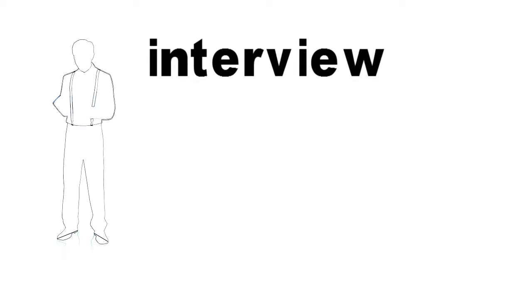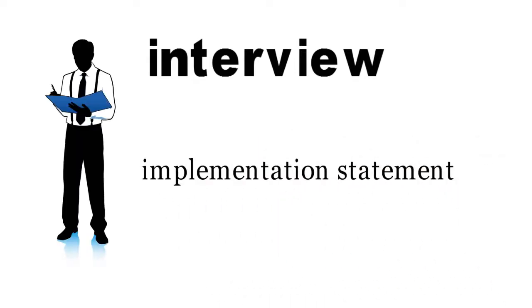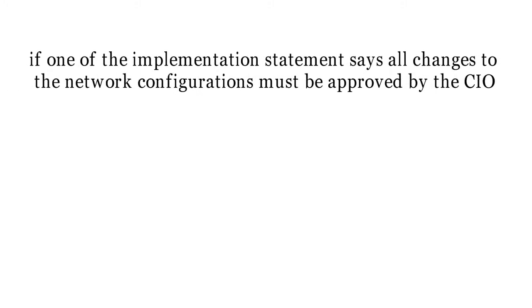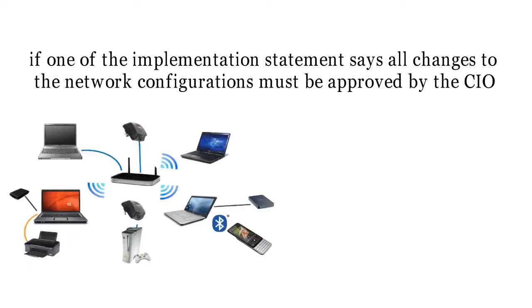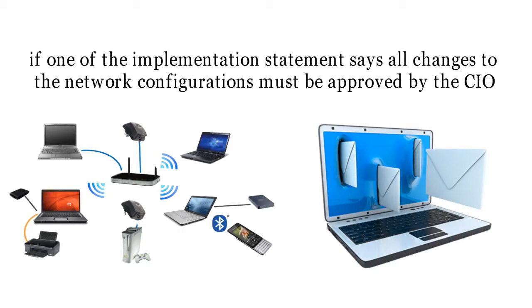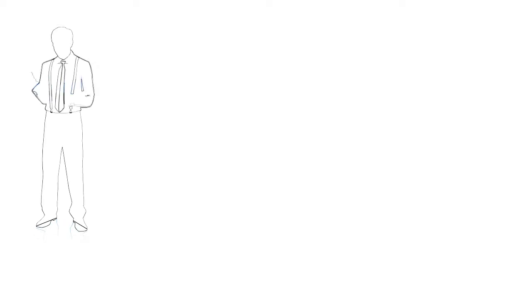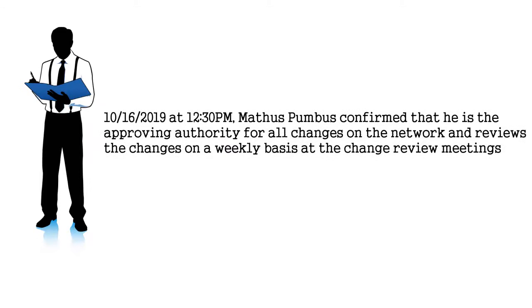A second method to test is to interview. This method is a statement from a DOP employee attesting that the implementation statement is true. For example, if one of the implementation statements says all changes to the network configuration must be approved by the CIO, we could ask the CIO in person or via email if he is the final approving authority for changes to the network. If he confirms, we capture a statement with the date and time — for example: 'On 10-16-2019 at 12:30 PM, Meethis Pumbis confirmed that he is the approving authority for all changes on the network and reviews the changes on a weekly basis at the change review meetings.'